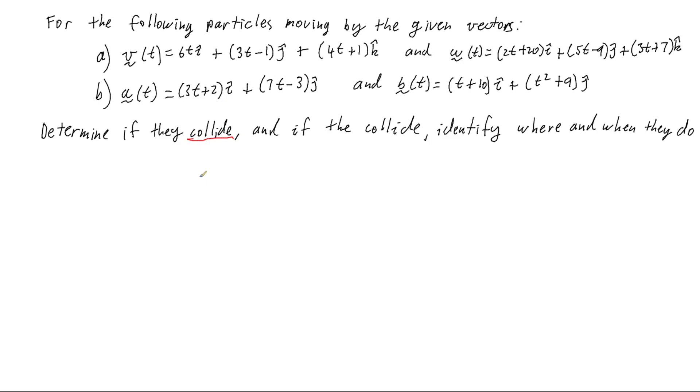So collision and path crossing is a little bit different. If we were just asking if the paths cross, we could have one particle doing this and another particle doing that, and their paths might cross, but they might not cross at the same time.